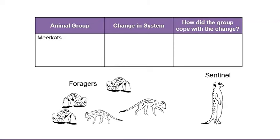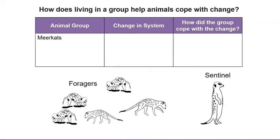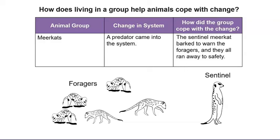The question we're asking today is, how does living in a group help animals cope with change? Let's use that question to think more about our meerkats. How did the meerkats cope with the change in the system? I noticed that a predator came into the system, so I'll write that down. The sentinel meerkats barked to warn the foragers, and they all ran away to safety. Amazing! I wonder whether other animal groups cope with change in similar ways. Let's find out.